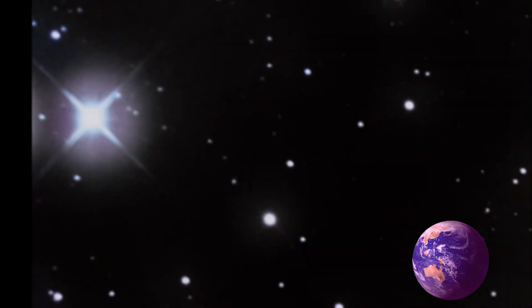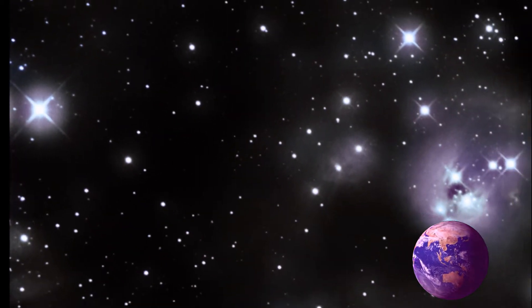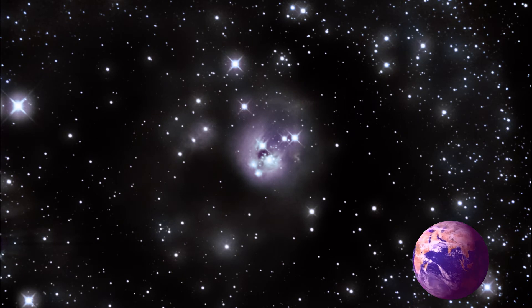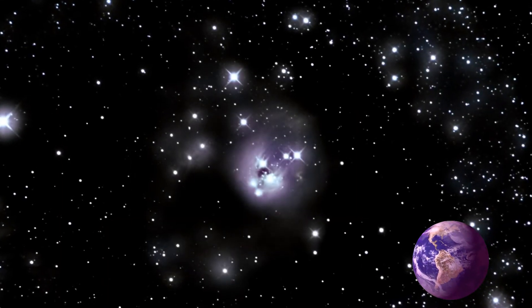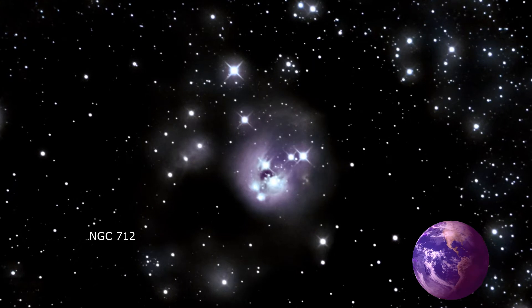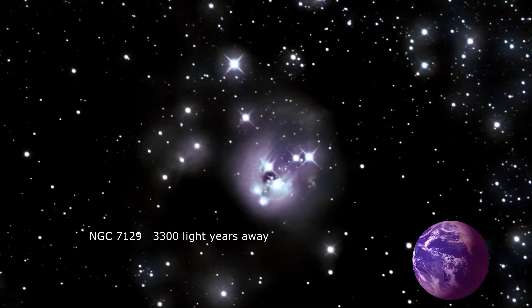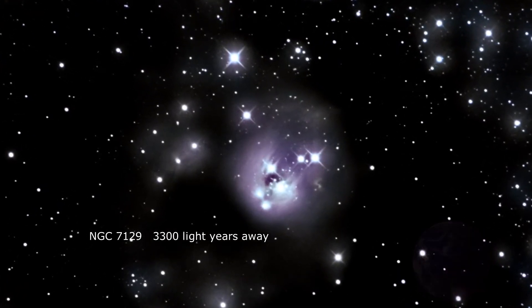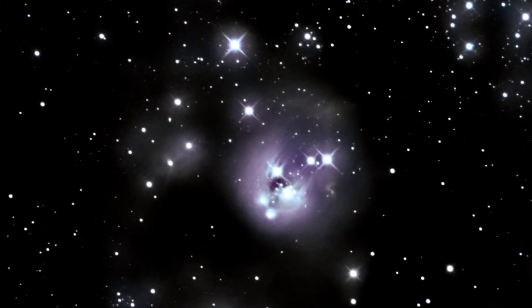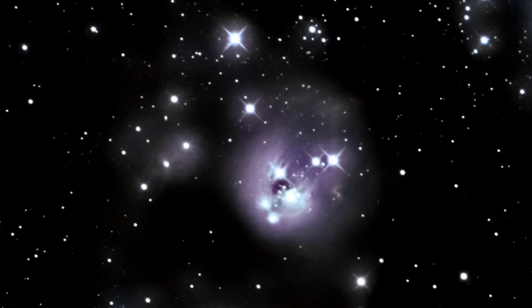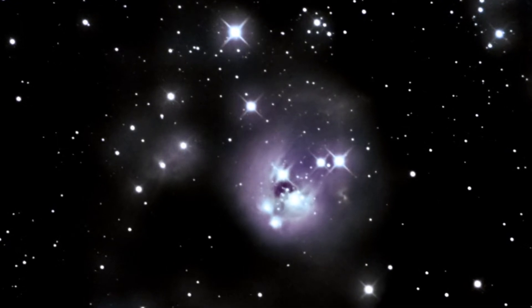NGC 7129, a reflection nebula located about 3,300 light-years away from Earth, is a young open cluster responsible for illuminating the surrounding nebula. The cluster contains more than 130 stars, less than 1 million years old. The nebula has a bluish magenta rosebud shape.